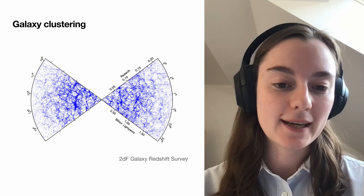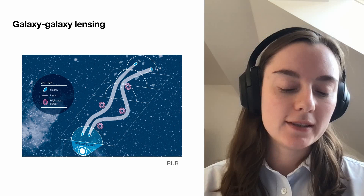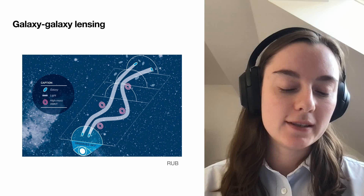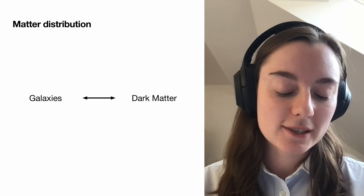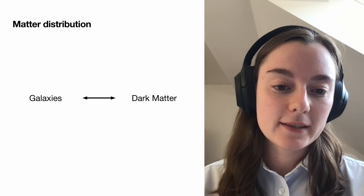What we're interested in is galaxy clustering — correlations between galaxy positions — and galaxy-galaxy lensing, which is correlations between galaxy positions and galaxy shapes. In this kind of work you're measuring galaxies, but what you really want to know about is the dark matter distribution. So you need to connect the galaxies to the dark matter. On large scales that's simple — it's a linear relation — but on smaller scales it's more complicated, and one option is the halo model.